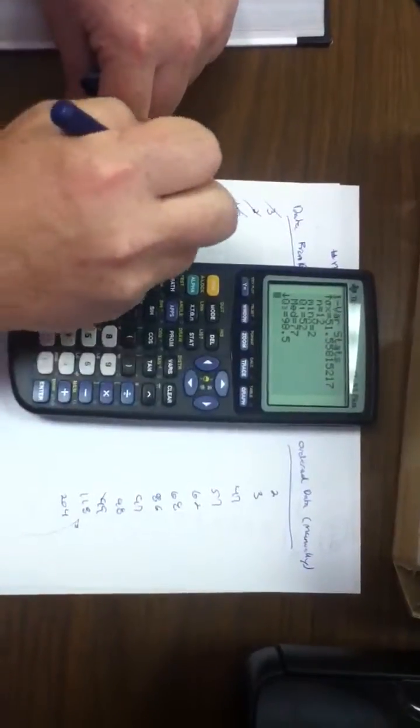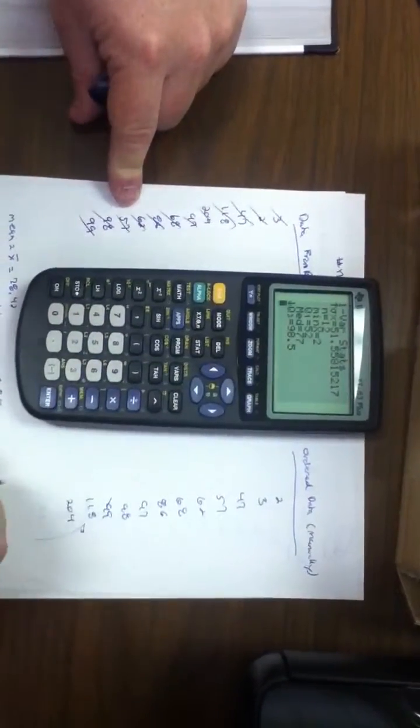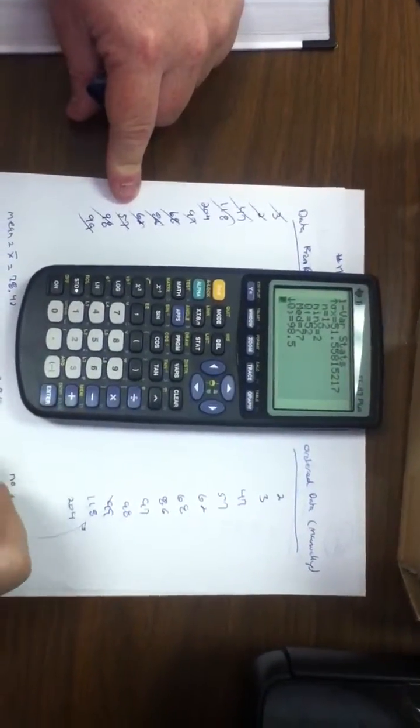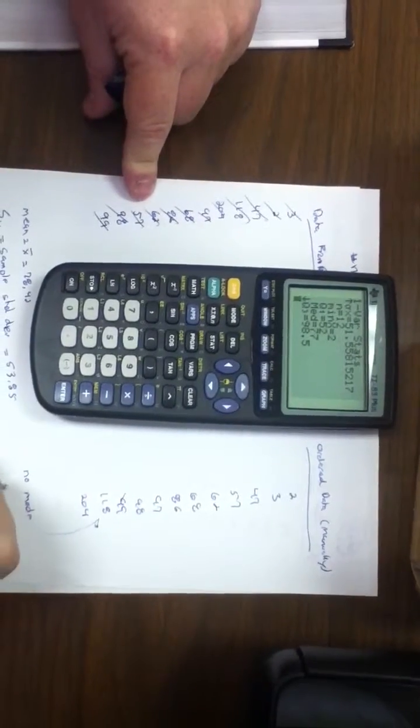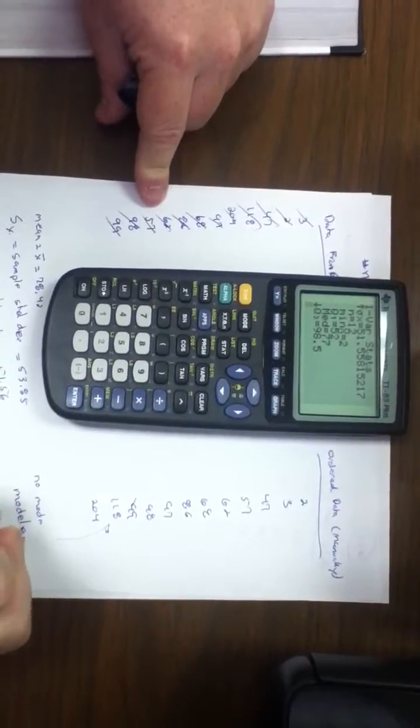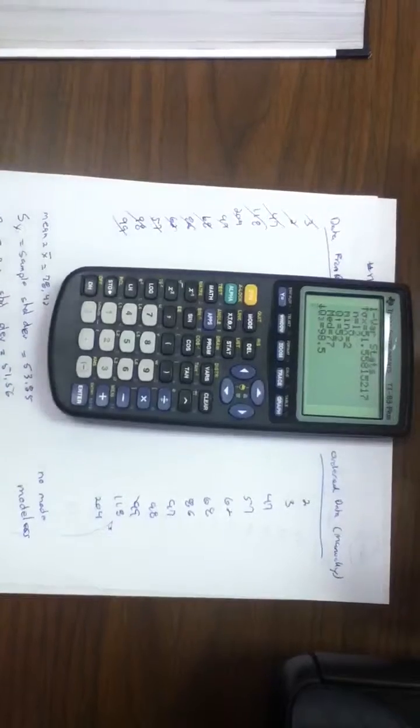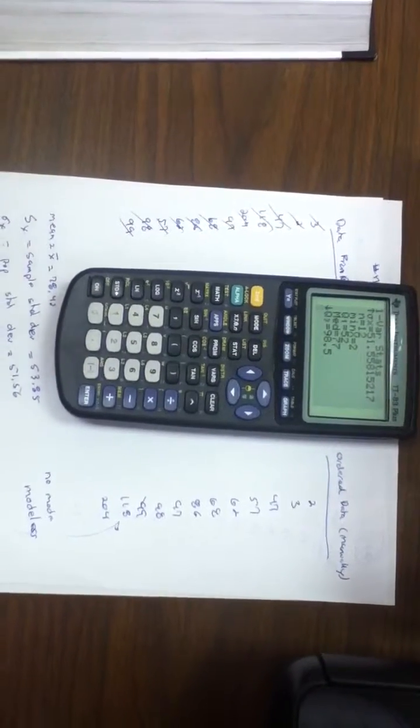Notice nothing duplicates itself. This is an example of a problem that has no mode, or we say it's modeless, because there's only one of each number. This concludes tutorial 1.